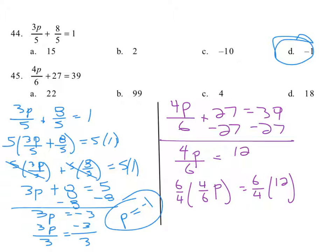Why am I doing that? Because right away, then, this, 6 times 4 is 24, 4 times 6 is 24, we get 24 over 24p or 1p or just p.